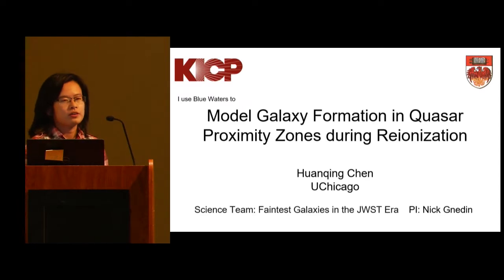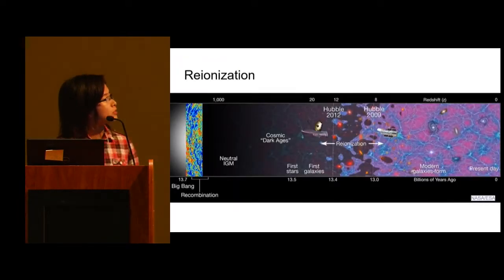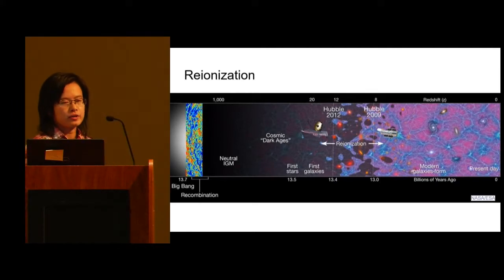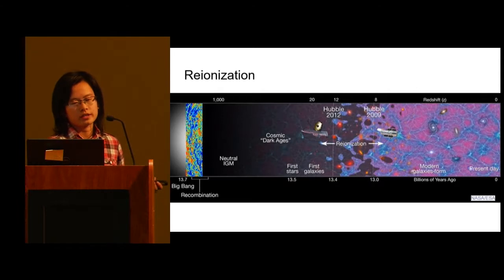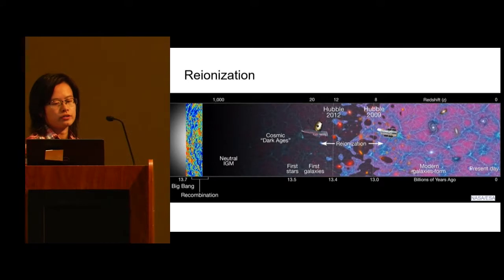So first, why do we study reionization? In the history of the universe, the gas experienced two major phase transitions. Very first, after the Big Bang, everything is very hot, everything is ionized. But as the universe expands and cools, the proton recombines with electrons and forms neutral hydrogen.